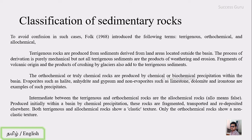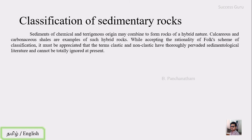This classification is easy to use and can be identified with a microscope or even in the field by examining texture. Sediments of mixed chemical and clastic origin may combine to form hybrid rocks. Calcareous and carbonaceous shales are examples — the calcareous and carbonaceous components were precipitated within the basin, while shale indicates transport, making it a hybrid rock. While accepting the rationality of Folk's scheme, it must be appreciated that the terms clastic and non-clastic are thoroughly established in sedimentological literature and cannot be totally ignored.